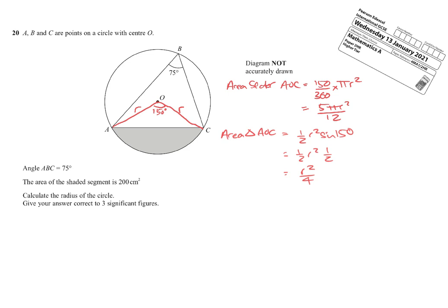Now, I know that if I have my sector and I take away my triangle, I will be left with the area of my shaded segment, which is 200. So I can write an equation.